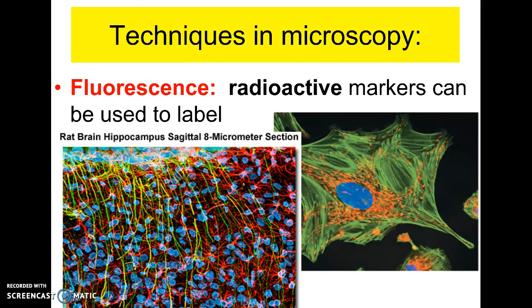Two more techniques we use: fluorescence — instead of using regular dyes, we can use radioactive dyes which, under electron microscopes, make things glow in different colors. So you might have a dye that specifically stains the nucleus, or parts of the cytoskeleton, or nerve fibers. You would be able to see everything glow, which obviously improves your contrast.